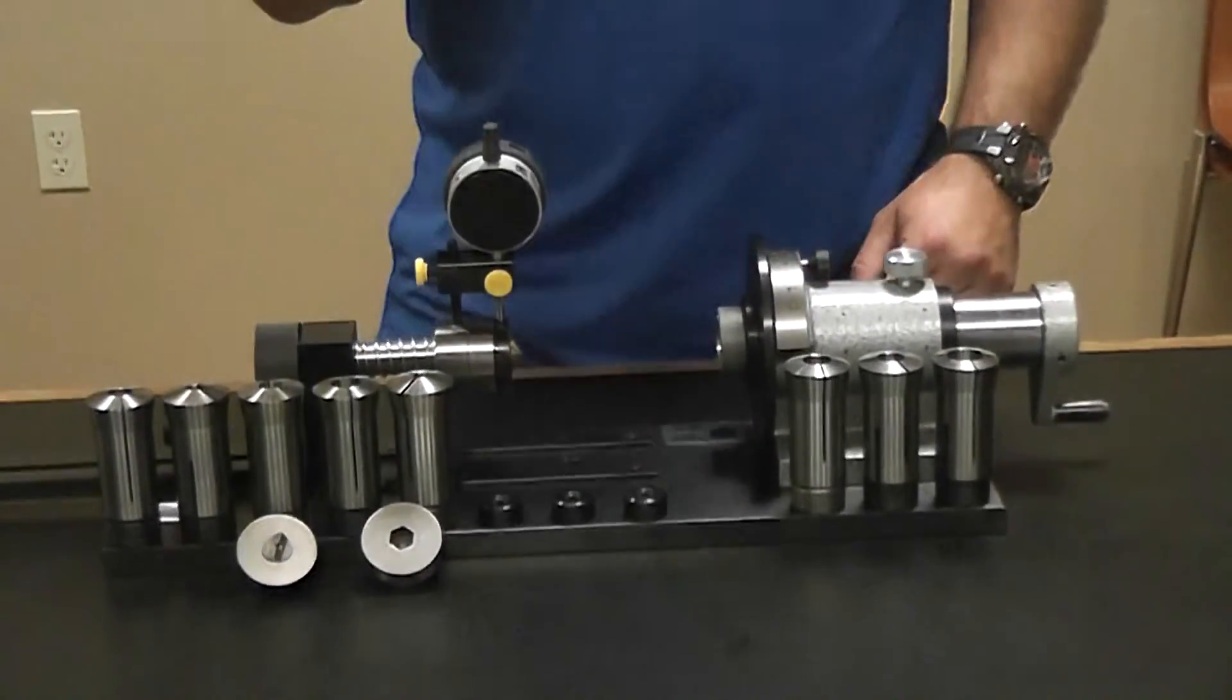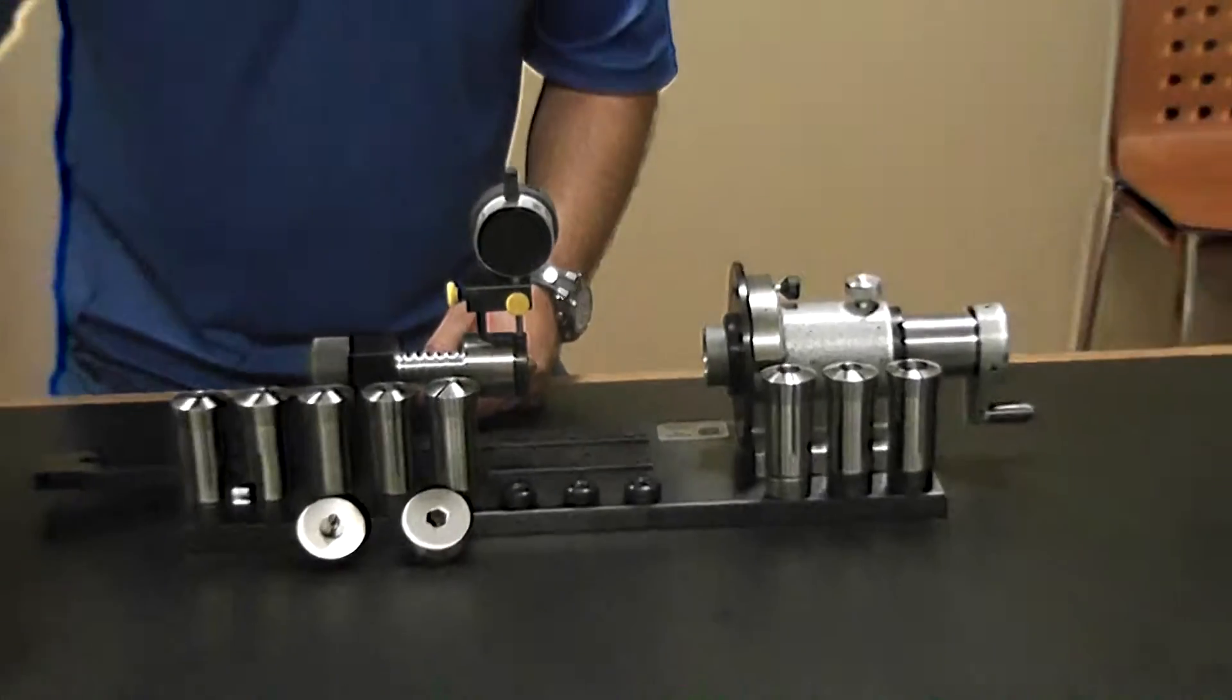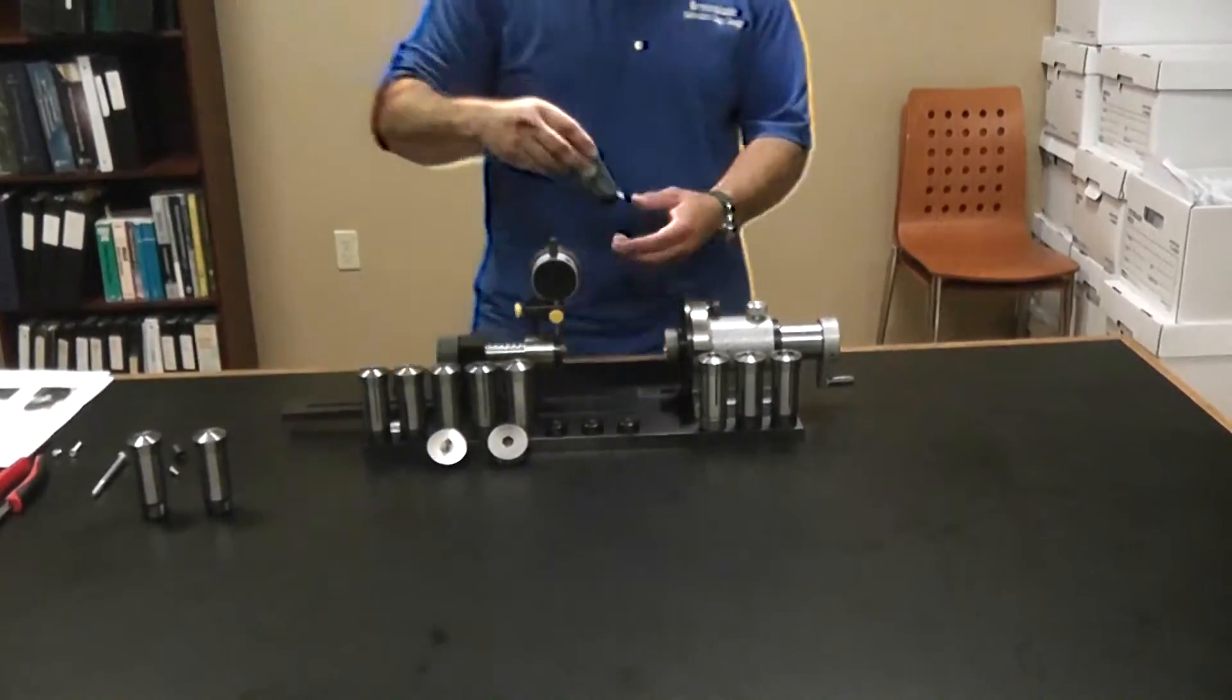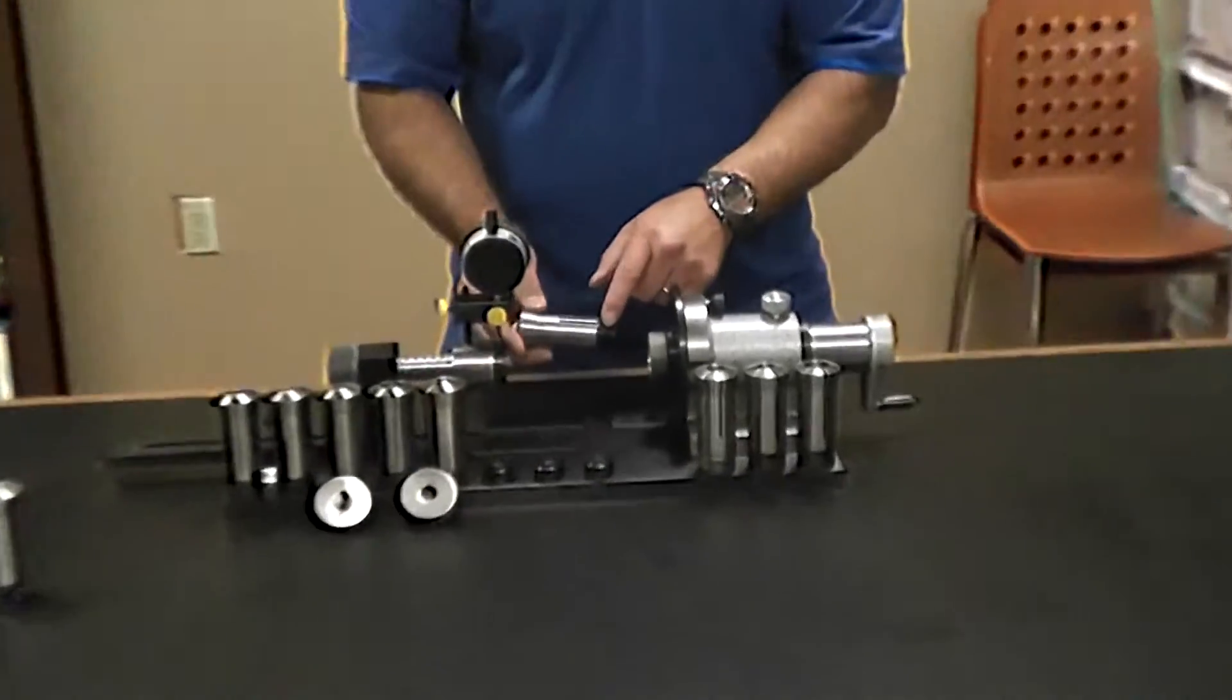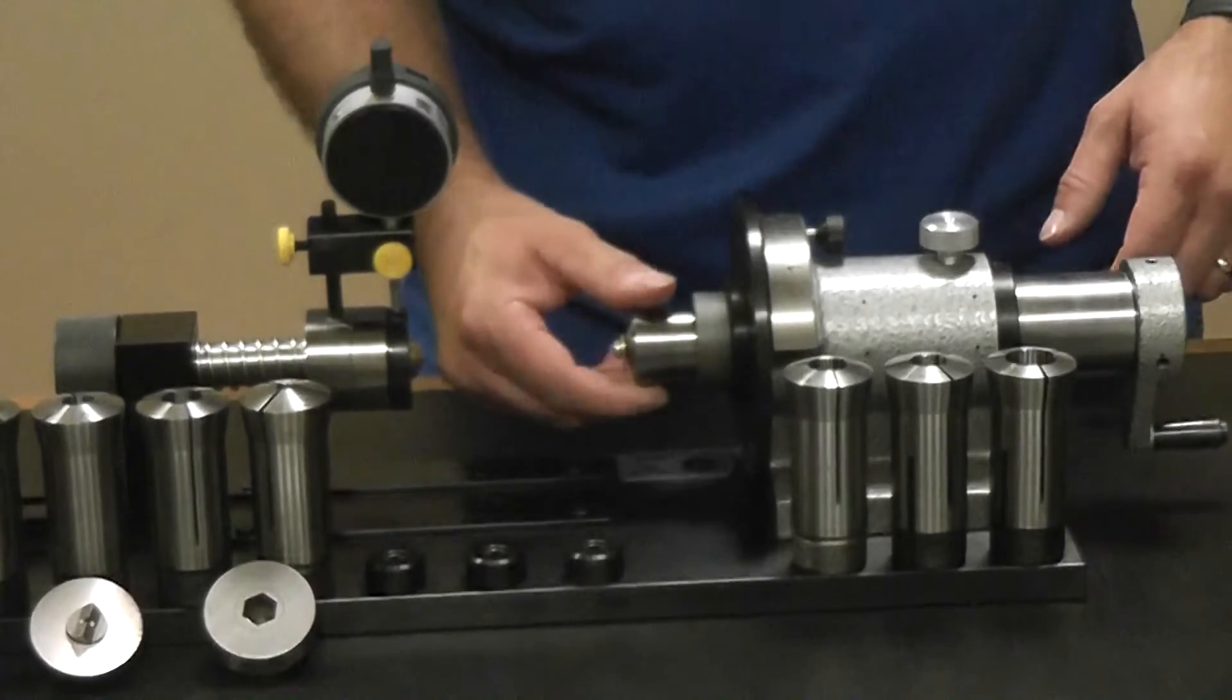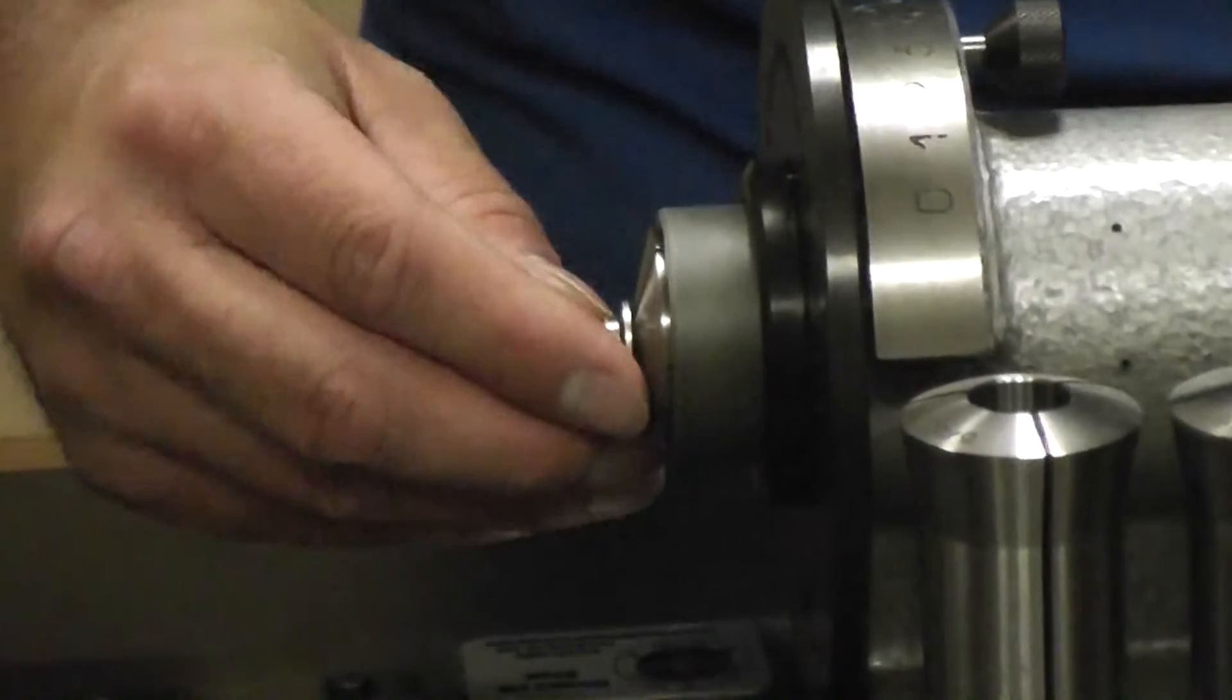Next, we obtain the fastener that we're going to be checking. We pick the proper size collet that it's going to fit into. There's a groove in the collet, just like any standard 5C collet. Rotate until it finds the pin, place it in there.